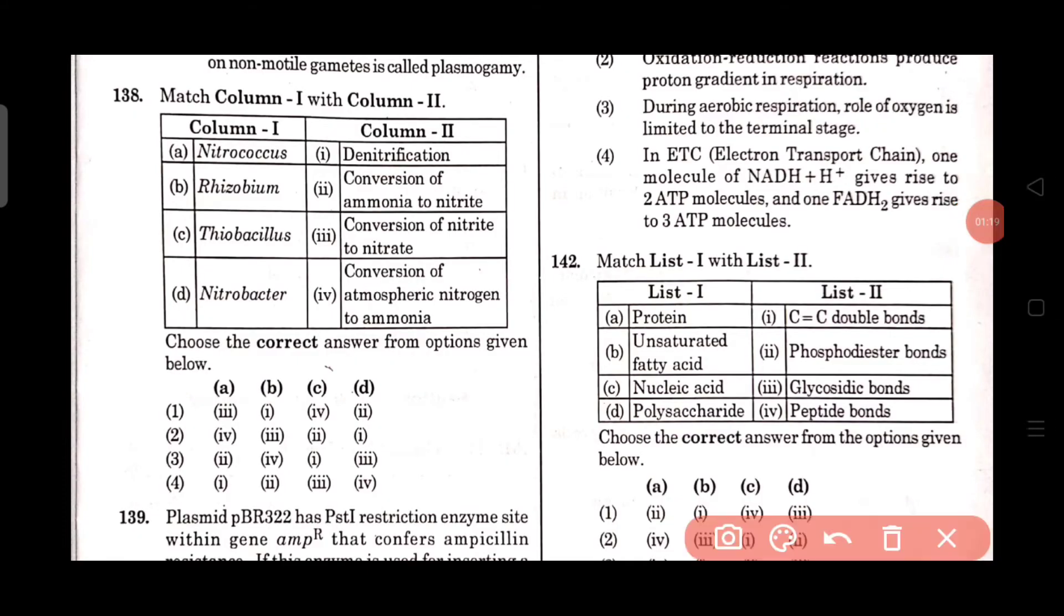Question number 138: Match column 1 with column 2. Nitrococcus helps in conversion of ammonia to nitrate. Rhizobium helps in conversion of atmospheric nitrogen to ammonia.